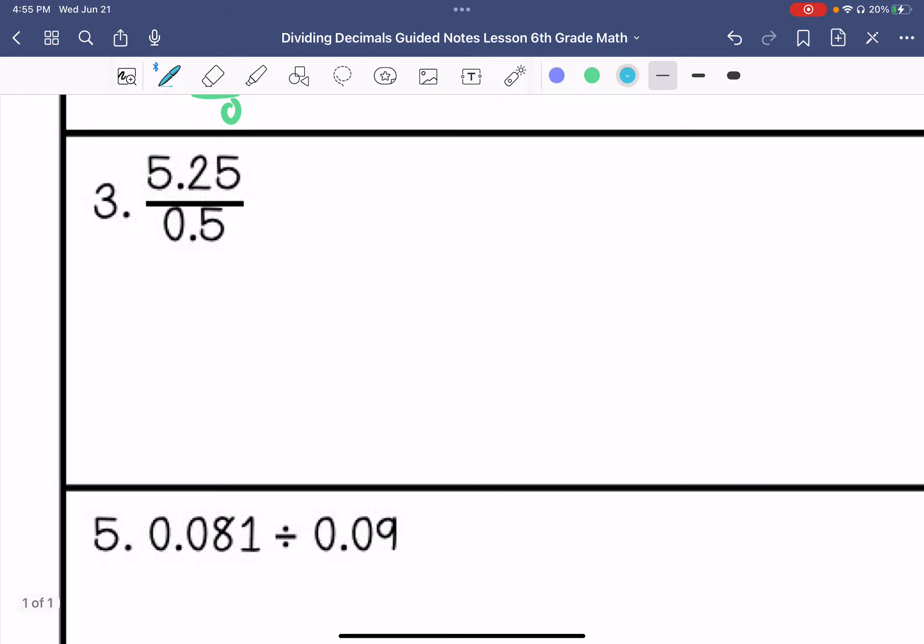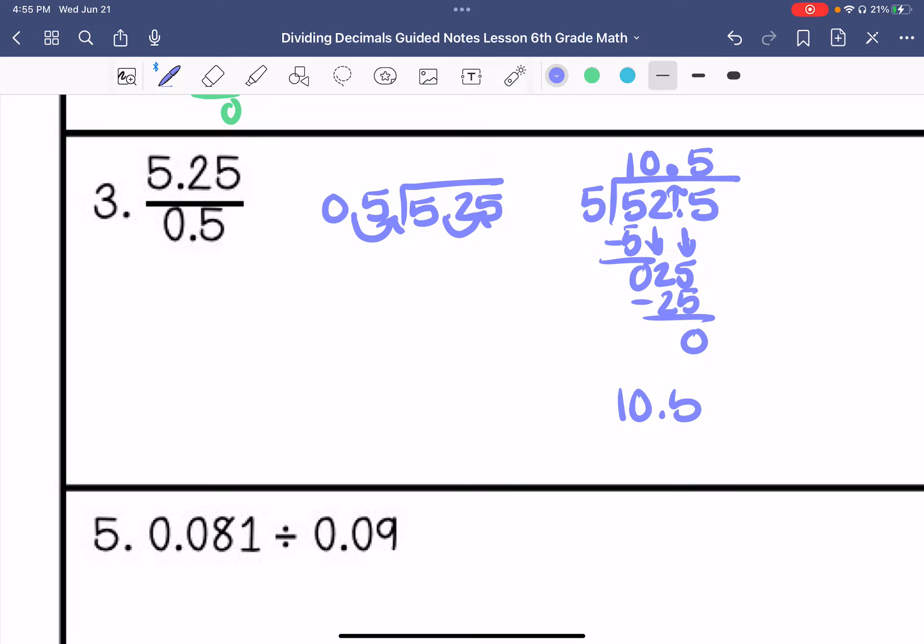Number 3. My divisor is 0.5. My dividend is 5.25. I move my decimal once. So I have 5 on the outside and 52.5. You can move the decimal at first. You don't have to wait until the end. 5 goes into 5 once. 5 goes into 2 zero times. 5 goes into 25 five times. So my answer is 10.5.